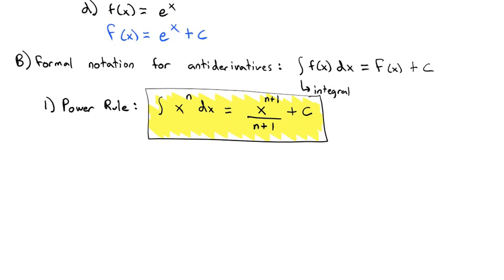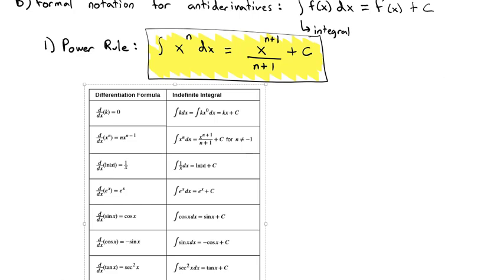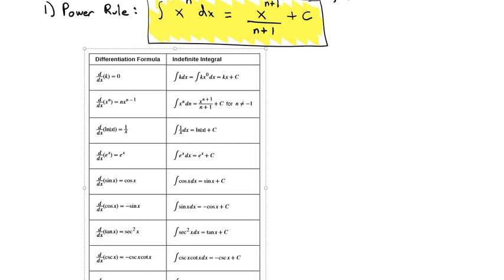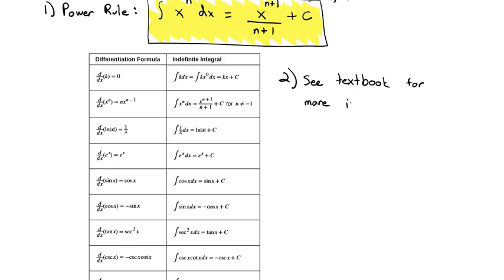There are actually a whole lot of integral rules. This table is copied out of your textbook — see textbook for more integral rules. The table is in section 4.10. It takes the differentiation formula we're familiar with and shows it backwards as an integration formula. The second entry is the power rule we just derived. But we're going to focus mainly on the power rule.